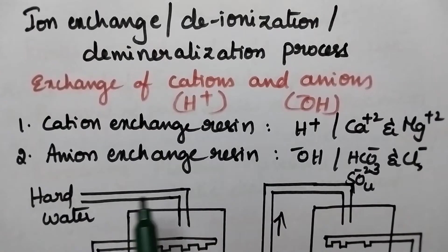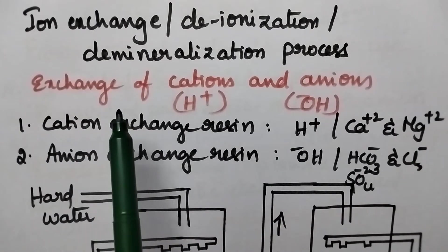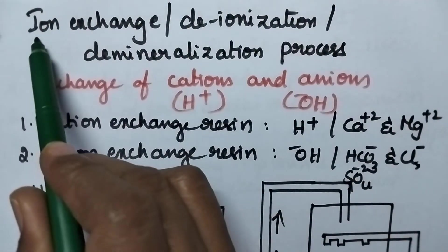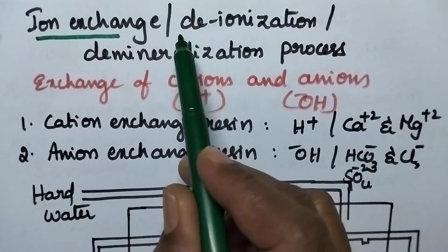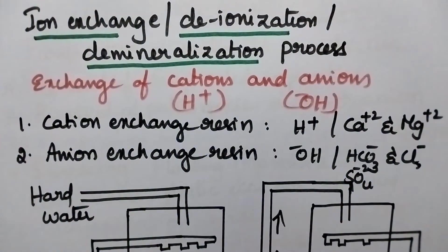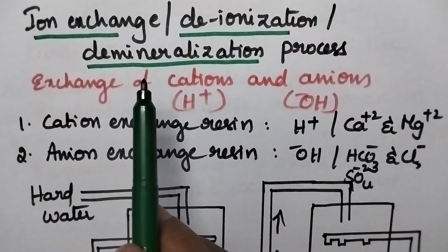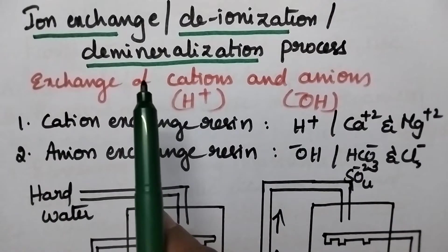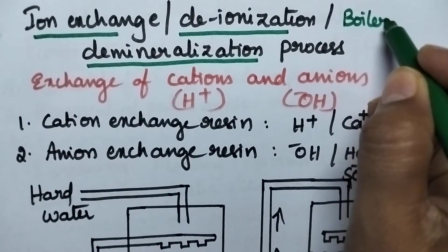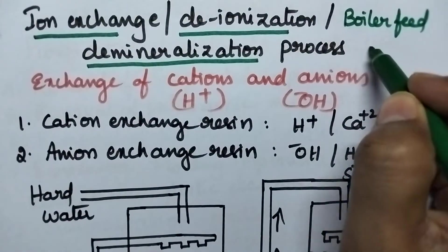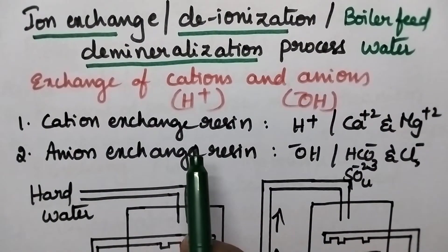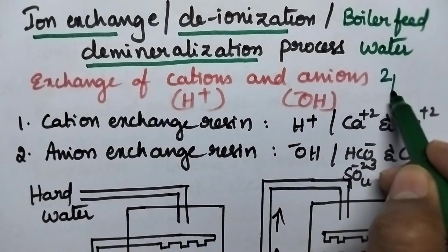Hello students, welcome back to my channel. In this video I am going to discuss in brief about the ion exchange process, which is also known as the deionization process or demineralization process. Ion exchange process is suitable for the treatment of boiler feed water, since through this method the hardness can be removed up to 2 ppm.